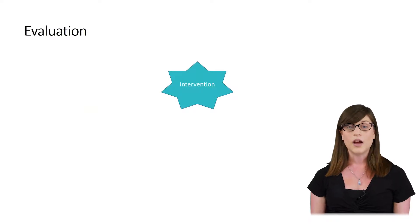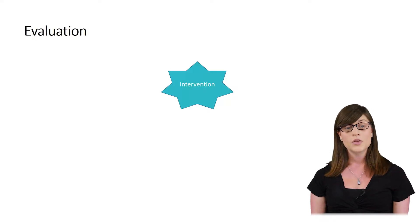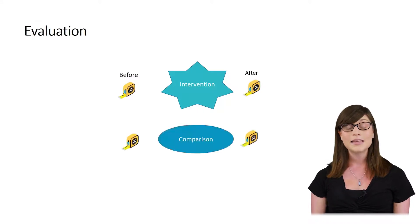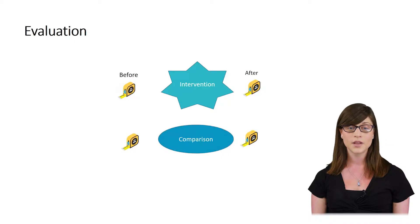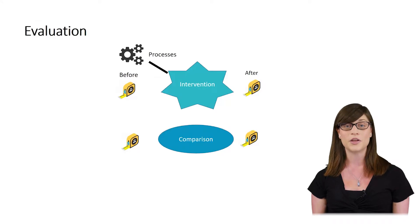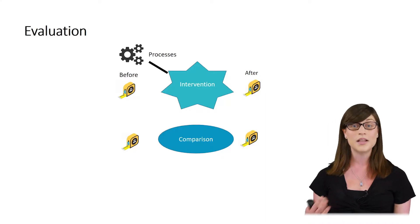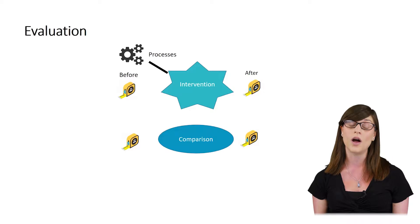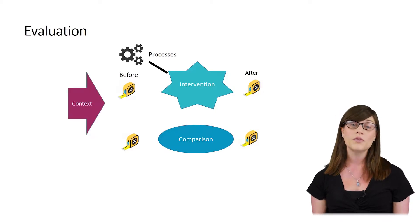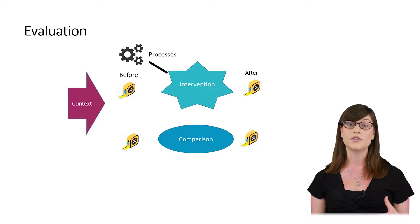I'm going to start by outlining what we see as a fairly traditional approach to evaluation, particularly for those working at the local level. What happens is you have your intervention, then you take measurements before and after. Ideally you do the exact same thing in a comparison area. If you have a bit more resource, you might also conduct a process evaluation, looking at how the intervention gets implemented, how it embeds within its local context, and picking up how and why it's working. With a bit more resource still, you might also get a sense of the context into which the intervention is being implemented.